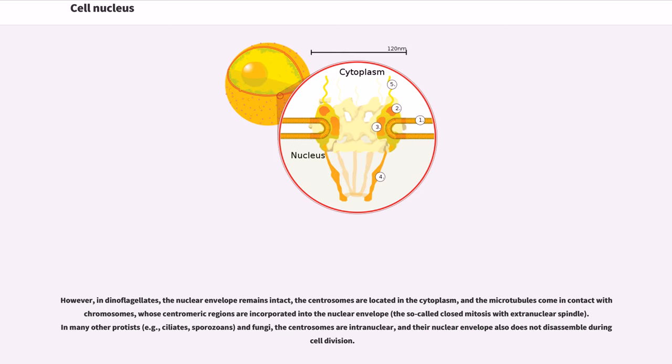However, in dinoflagellates, the nuclear envelope remains intact, the centrosomes are located in the cytoplasm, and the microtubules come in contact with chromosomes, whose centromeric regions are incorporated into the nuclear envelope, the so-called closed mitosis with extranuclear spindle. In many other protists, for example, ciliates, sporozoans, and fungi, the centrosomes are intranuclear, and their nuclear envelope also does not disassemble during cell division.